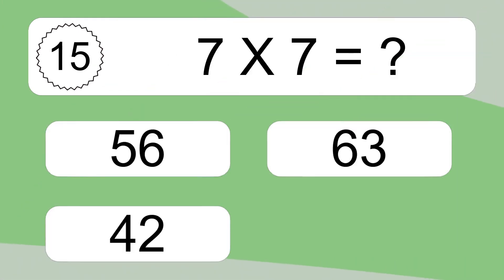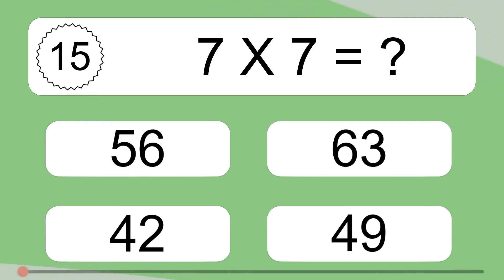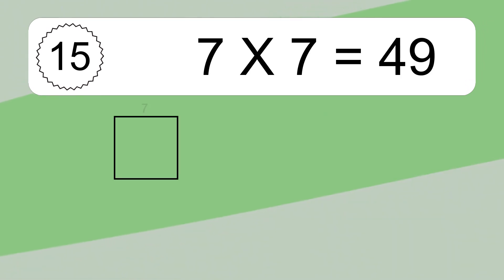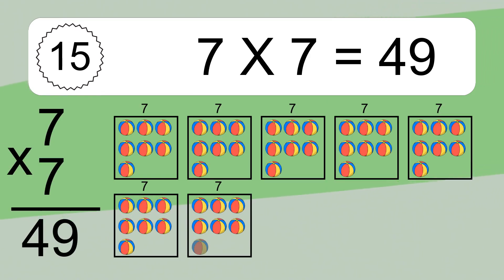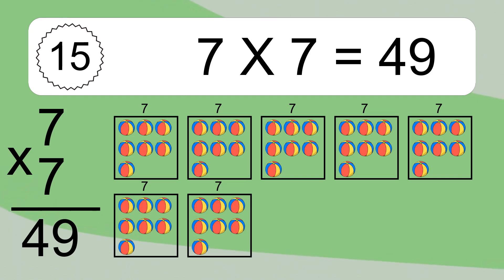7 times 7 equals what? 7 times 7 equals 49. We have 7 boxes, and each box has 7 colorful balls inside. If you count all the balls in all the boxes together, you will have 7 times 7 balls. This equals 49 balls.